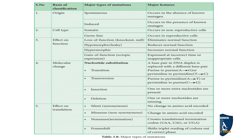Transition means purine to purine — adenine to guanine — or pyrimidine to pyrimidine — thymine to cytosine. Adenine and guanine are purines; thymine and cytosine are pyrimidines. Transversion means purine to pyrimidine or pyrimidine to purine — for example, adenine to thymine, or cytosine to guanine.